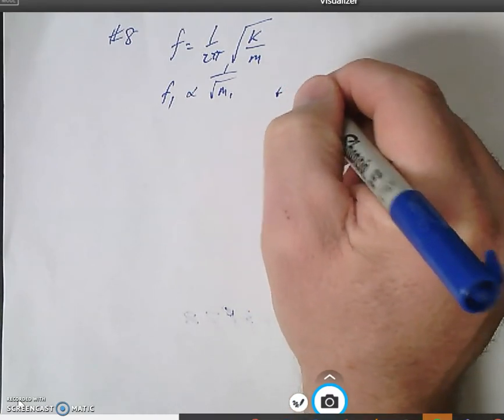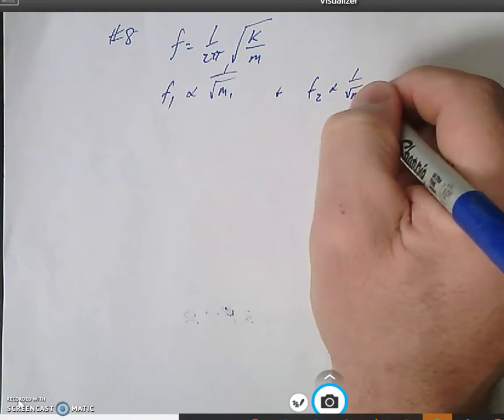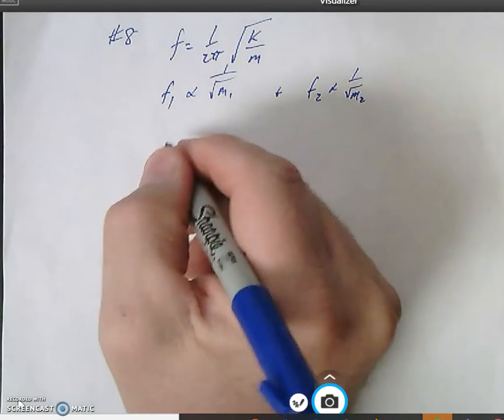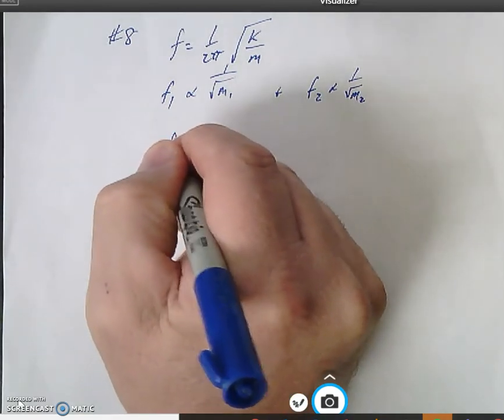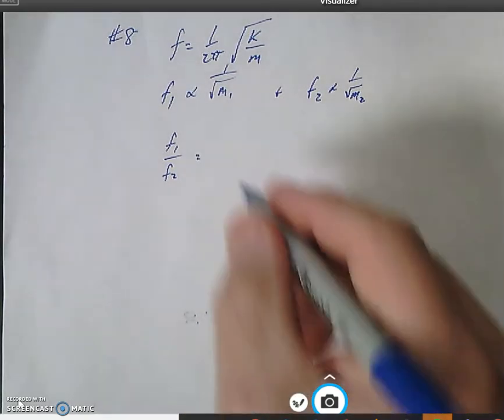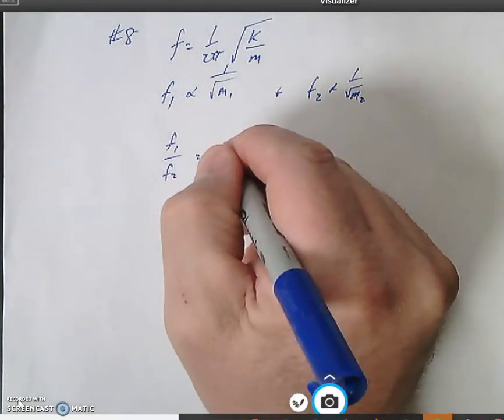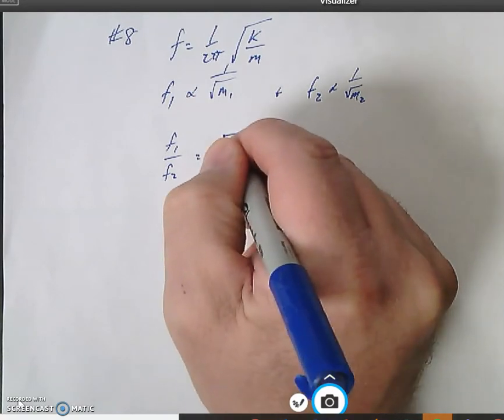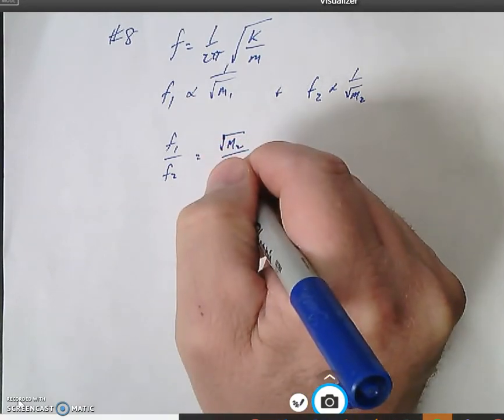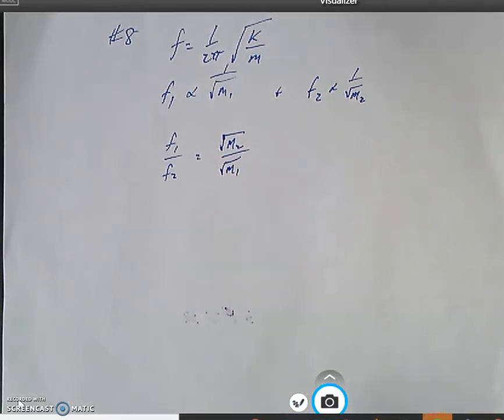And what that means then is that f2 is proportional to one over the square root of m2. So since they're inversely proportional, if I took a ratio, then the ratio of f1 to f2 would be equal to the reverse of the inverse, would be equal to the square root of m2 over the square root of m1.